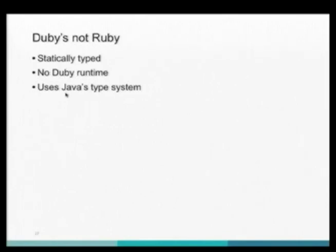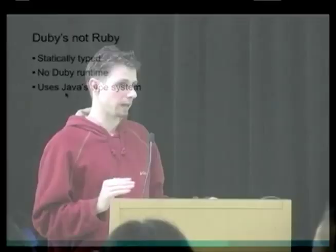There's no Doobie runtime at all. You run the compiler, it spits out a plain Java class, and all it depends on is the Java runtime. So starting up Doobie is super fast. You also benefit from Java's on-demand loading. So even if you require some other library, it's not going to load up the classes for that until you actually use them. That helps a lot when you're running on App Engine.